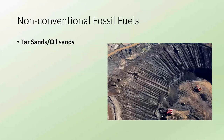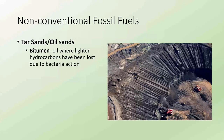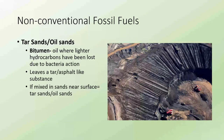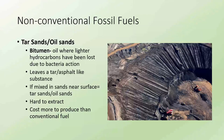Then there are tar sands and oil sands. The material being harvested is called bitumen — this is oil where the lighter hydrocarbons have been lost due to bacterial action and migration into the air, leaving just a tar or asphalt-like substance with really heavy, long hydrocarbon chains. When these are mixed near the surface in sands, they're called tar sands or oil sands. They're very hard to extract and cost a lot more to produce than conventional fossil fuels.